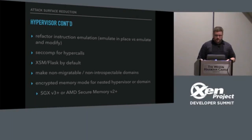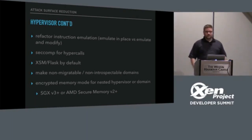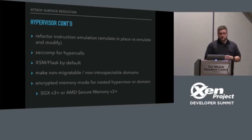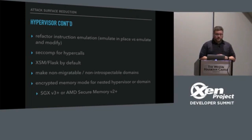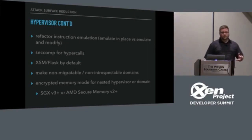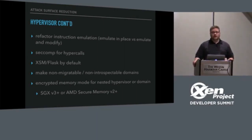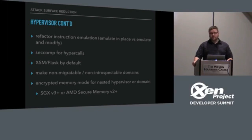I kind of mentioned this already — refactor the instruction emulator into kind of two phases so we can deprivilege part of it. An idea I've had is kind of having like a seccomp BPF on the hypercalls, so that you can load a seccomp policy through XenCtl and restrict hypercalls that your domain shouldn't be allowed to use — kind of an intermediate for people that don't want to use XSM Flask.